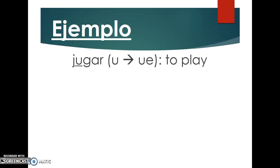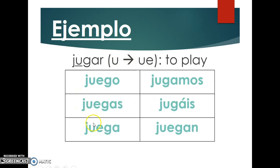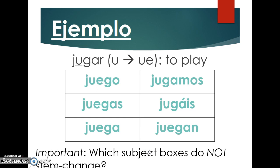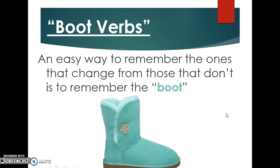So a few examples. The verb 'jugar' is a U to UE stem changer. In the notes, the letter that stem changes is underlined. The full conjugation looks like this: yo juego, tú juegas, él/ella/usted juega, nosotros jugamos, vosotros jugáis, ellos/ustedes juegan. Looking at these, the ones that stem change — juego, juegas, juega, juegan — are inside the 'boot,' while nosotros and vosotros fall outside the boot and do not stem change.